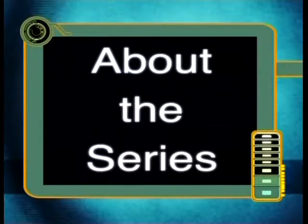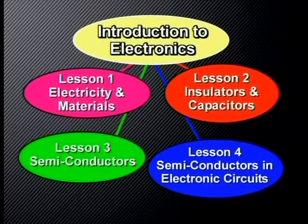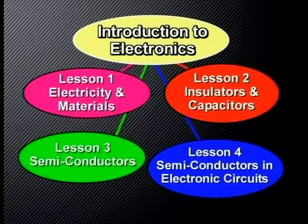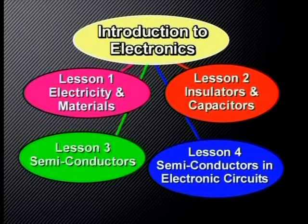You may want to make notes, so have pencil and paper ready. There are four lessons in this series in which we show how different materials are affected by electricity. We do this by investigating the relationship between potential difference and current for conductors, insulators and semiconductors. We also show how these materials are used to make different electronic components, including resistors, capacitors, diodes and LEDs.